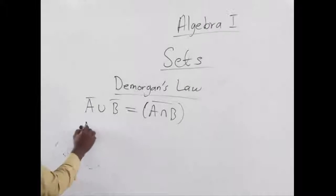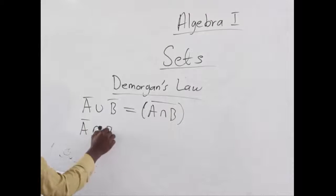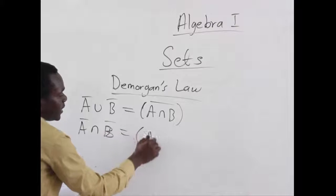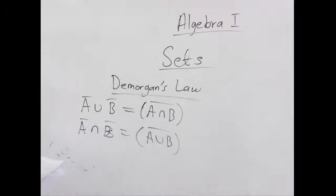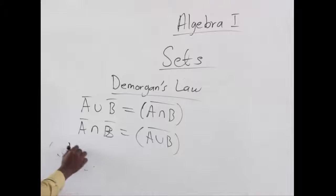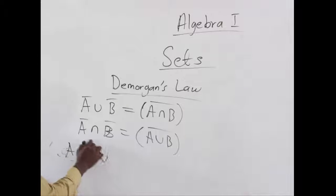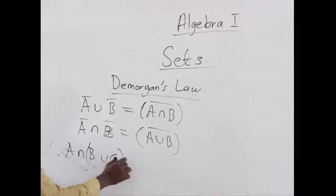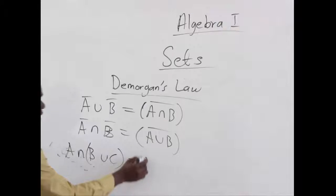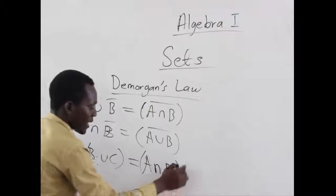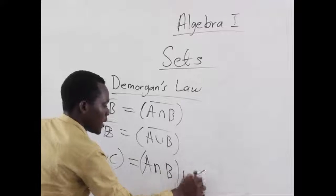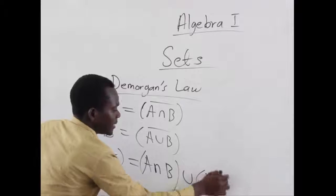We also say A complement intersection B complement equals A union B complement. And we also have the distributive property: A intersection (B union C) equals A intersection B union A intersection C.